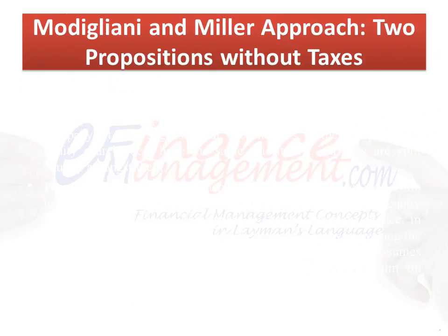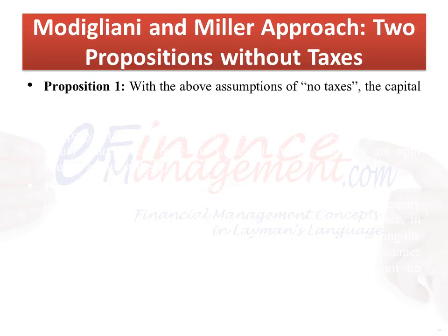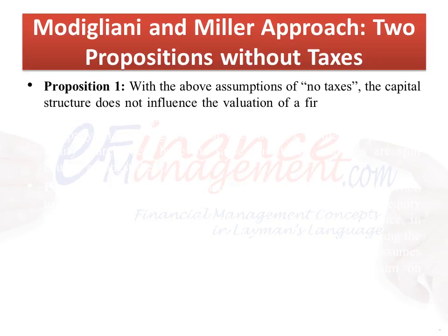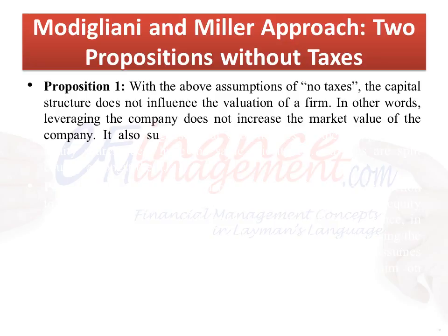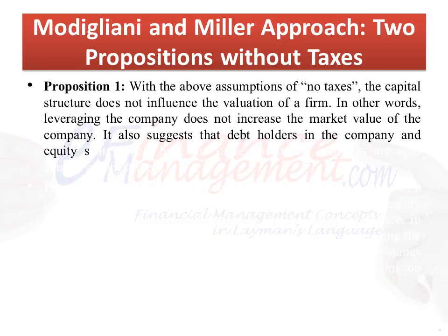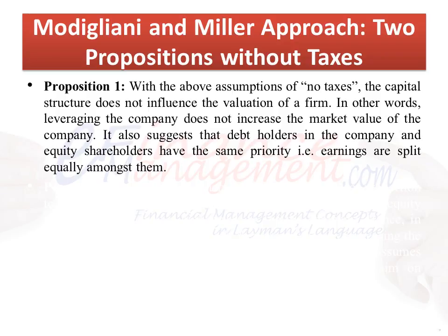Modigliani and Miller Approach — Two Propositions Without Taxes. Proposition 1: With the assumption of no taxes, the capital structure does not influence the valuation of a firm. In other words, leveraging the company does not increase the market value of the company. It also suggests that debt holders and equity shareholders have the same priority — that is, earnings are split equally amongst them.